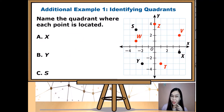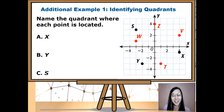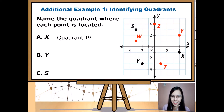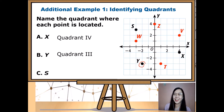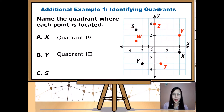Let's identify the quadrants where each point is located. Point X is located in Quadrant 4. Point Y is located in Quadrant 3. Point S is located in Quadrant 2.